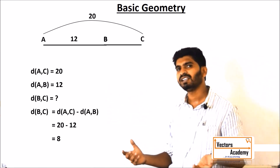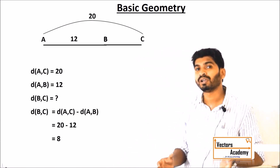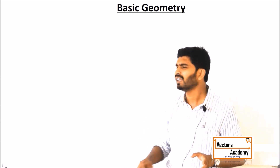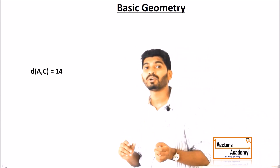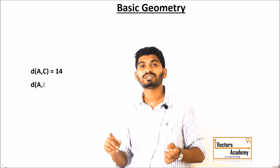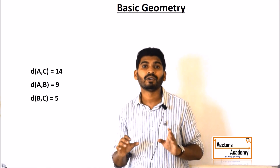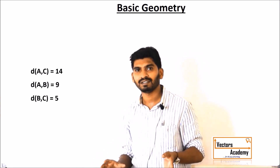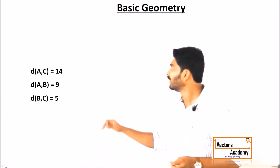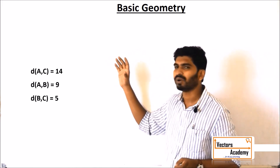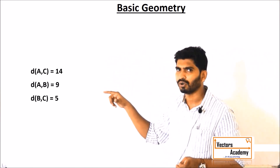Now let's see how we identify whether three points are collinear or not. This addition and subtraction is only possible if the points are collinear. If the points are non-collinear — they don't align — then we cannot find the exact distances. So we will now look into how to identify whether the three points given are collinear or not.